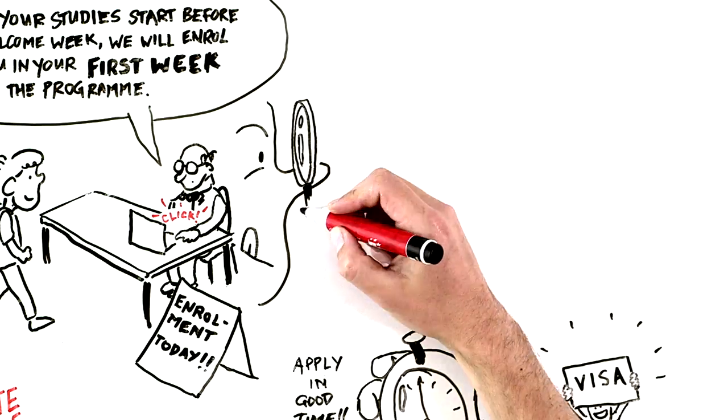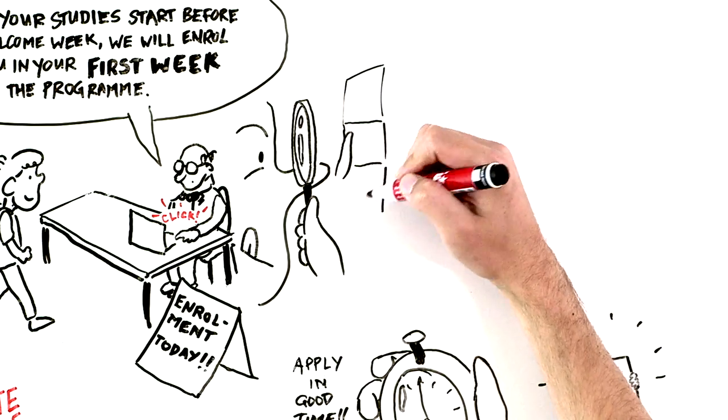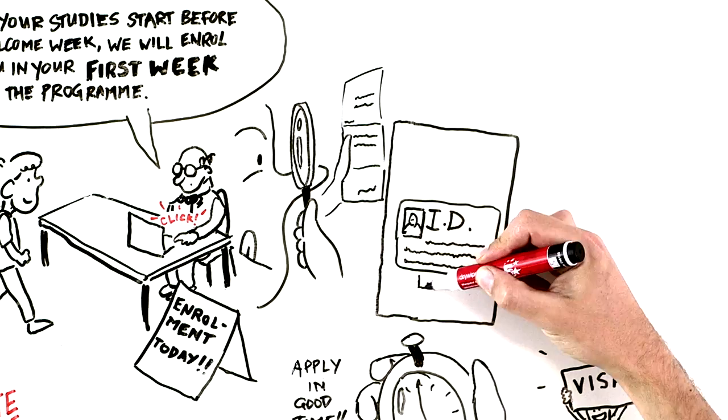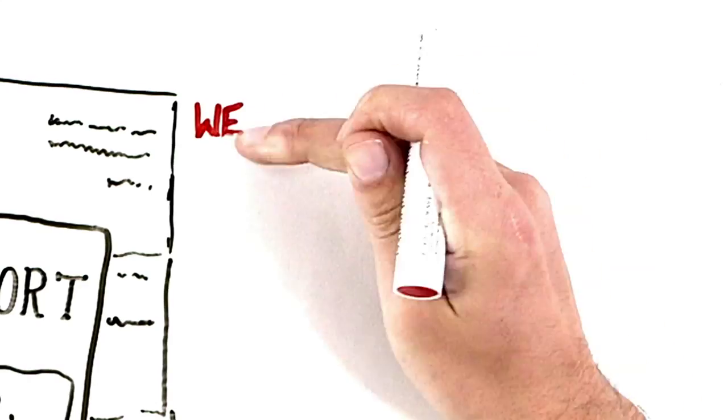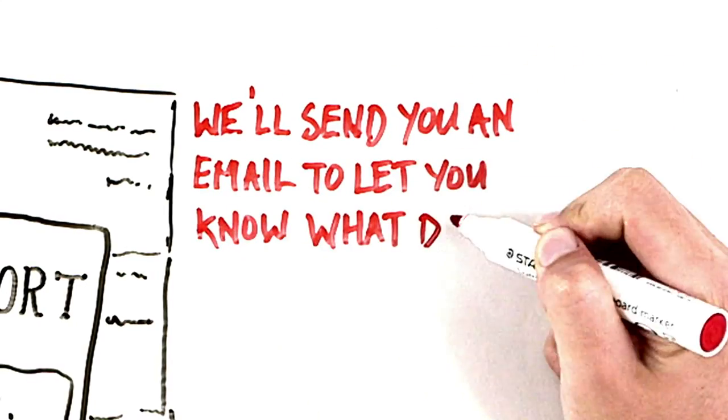At enrollment, we'll check that the information you've entered in online registration is still correct, and we'll need to see your photo ID and any other original documents we have asked you to provide. We will send you an email to let you know what documents to bring with you.